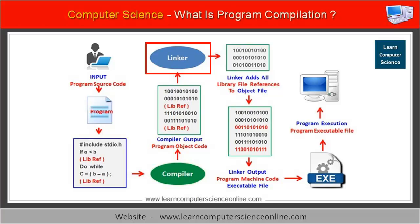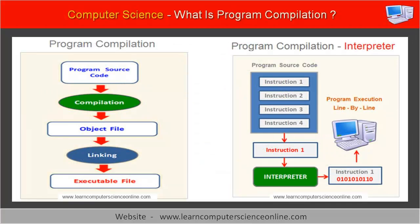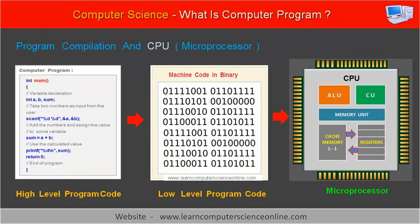The linker is a type of system software which is built into the compiler itself. The linker links all the object code files and builds an executable file which the computer CPU can directly execute. In the case of compiled language, the compiler accepts the entire program source code and converts it into machine code in binary. For example, the C language compiler converts the entire source code into machine-readable executable code, which can be directly executed by the computer system.